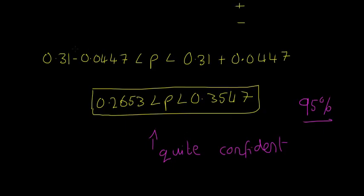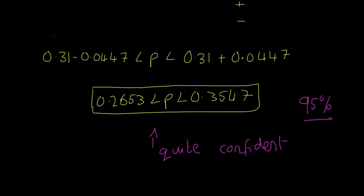You always say your population proportion minus your margin of error, and then your sample proportion plus your margin of error, and we know that the population should lie between these two limits in this interval.